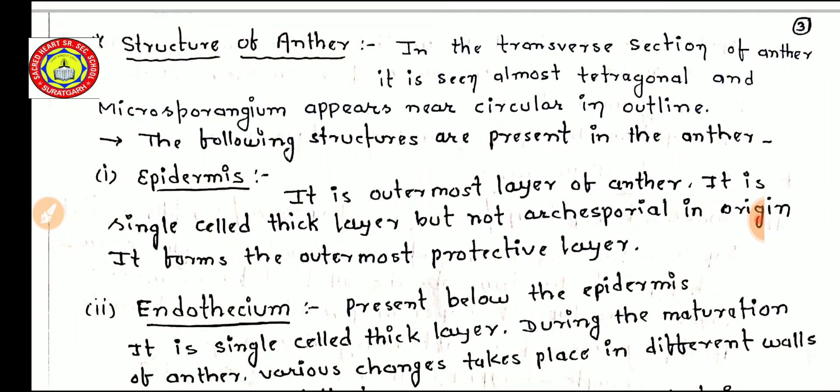In the transverse section of the anther, it appears almost tetragonal, and the microsporangia appear nearly circular in outline. As you can observe in the diagram, four microsporangia are present in a dithecous anther. The following structures are present in the anther.